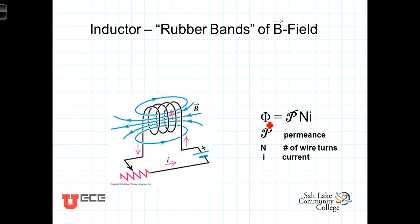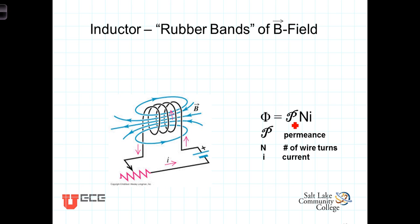The magnetic flux is a function of the B field and its density. We talk about the flux being equal to the product of permeance times the number of turns in the coil times the current flowing through the coil. Permeance is a measure of the core material's ability to conduct magnetic field — the higher the permeance, the better the magnetic field will flow through the core. N is the number of wire turns in the coil, and the current is the current flowing through the coil inducing the magnetic field. The strength of the magnetic field is proportional to permeance, number of turns, and most importantly, the current flowing through the coil.